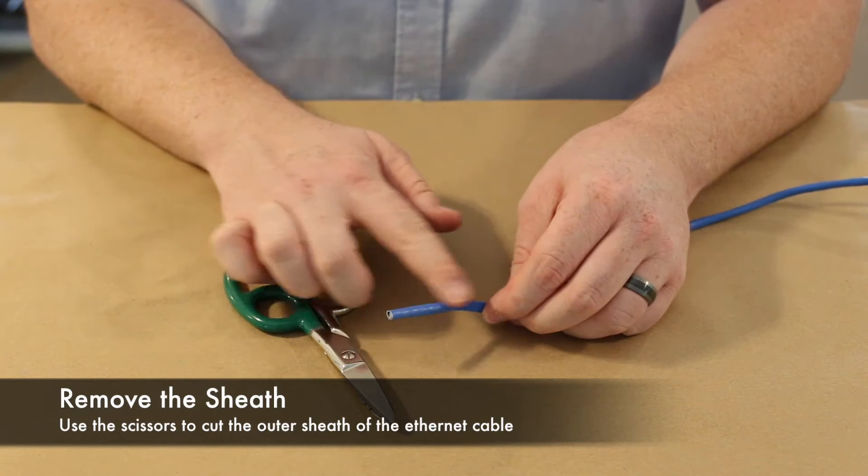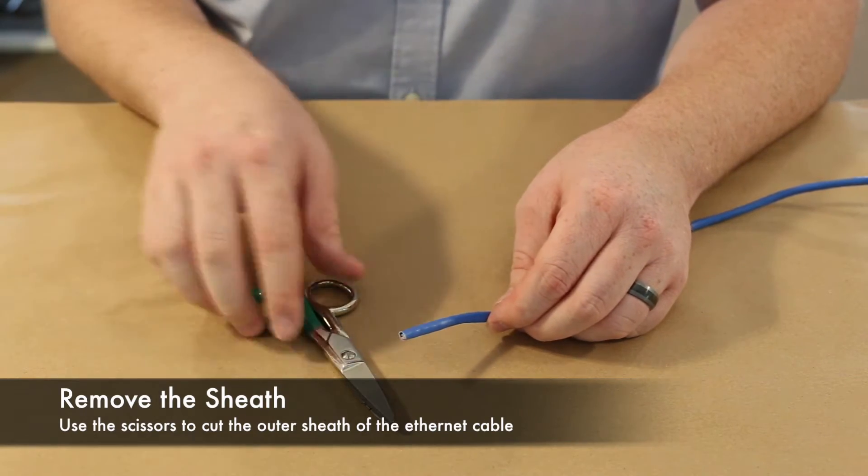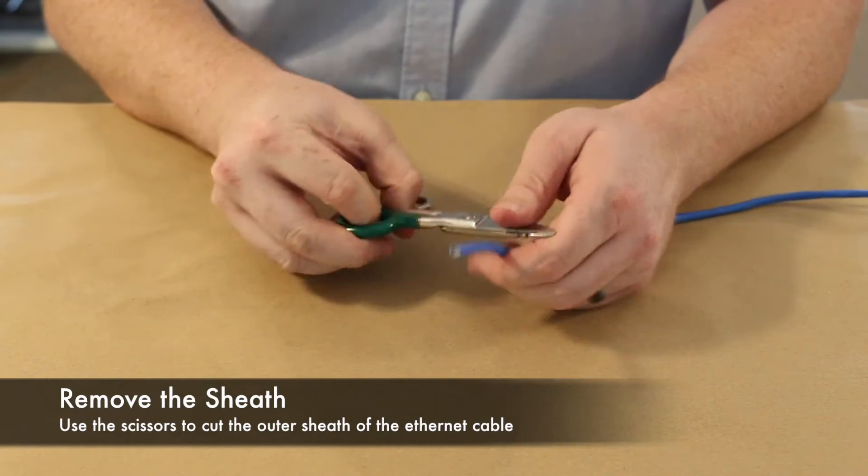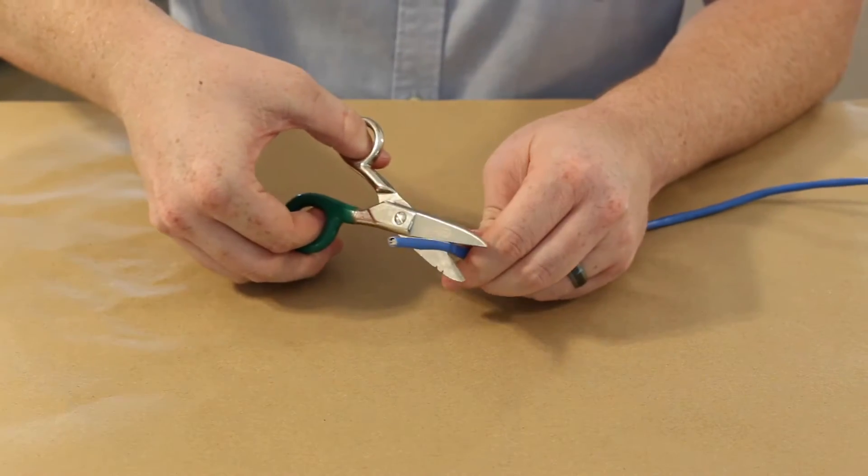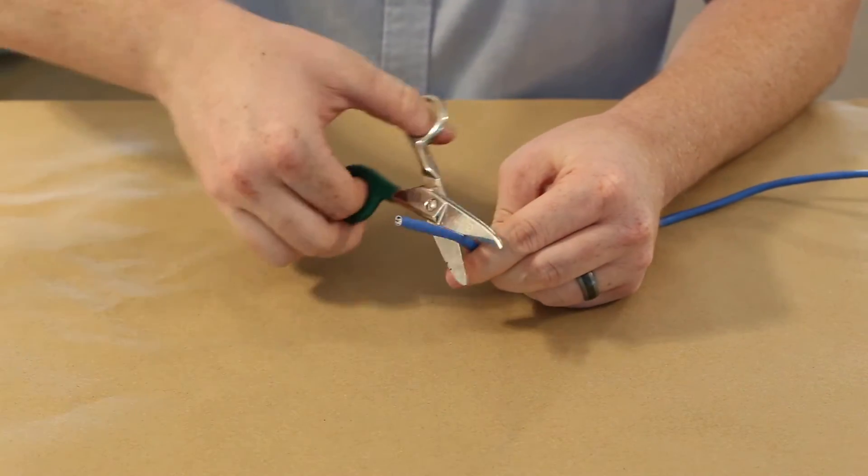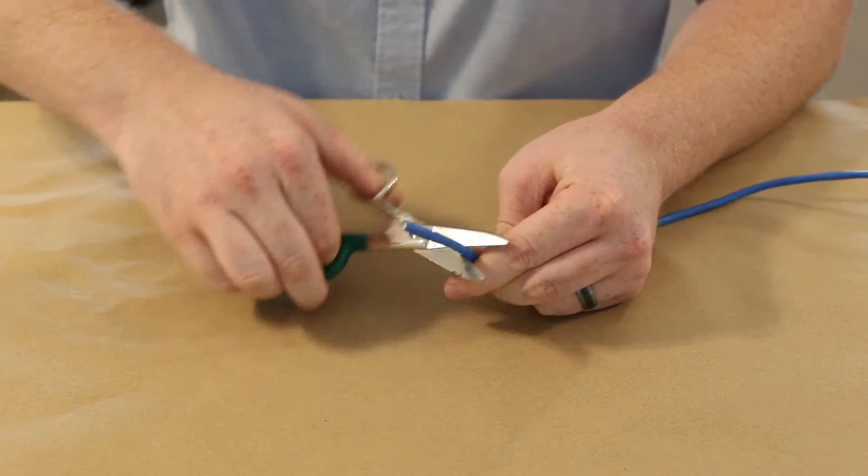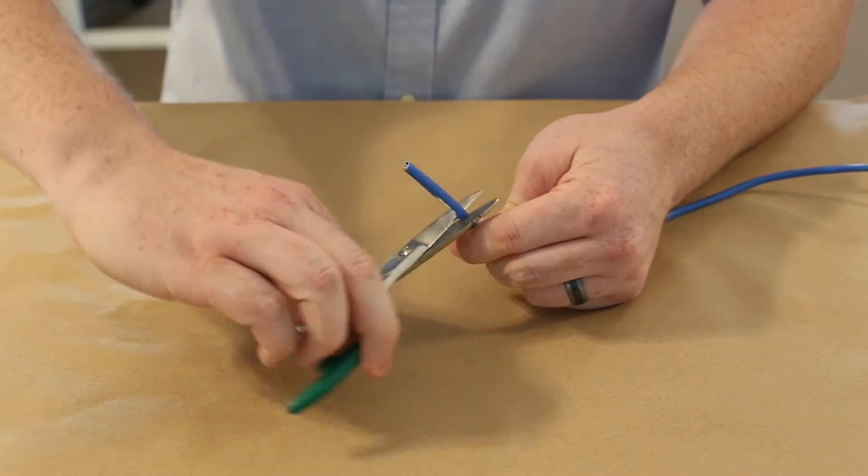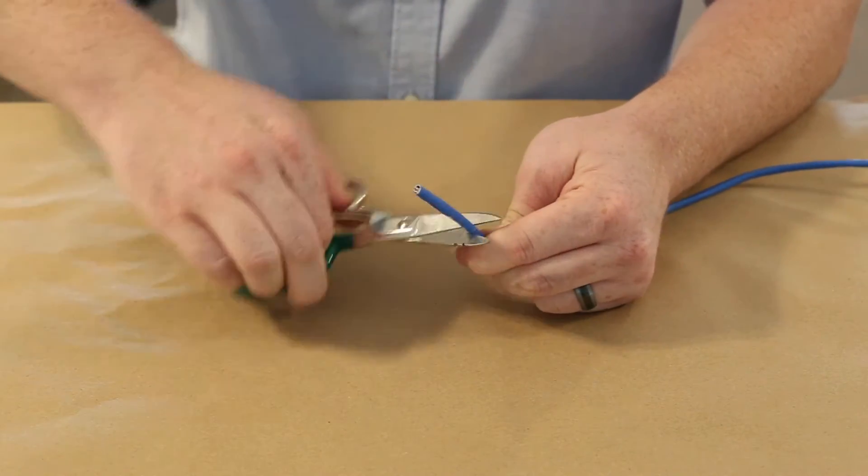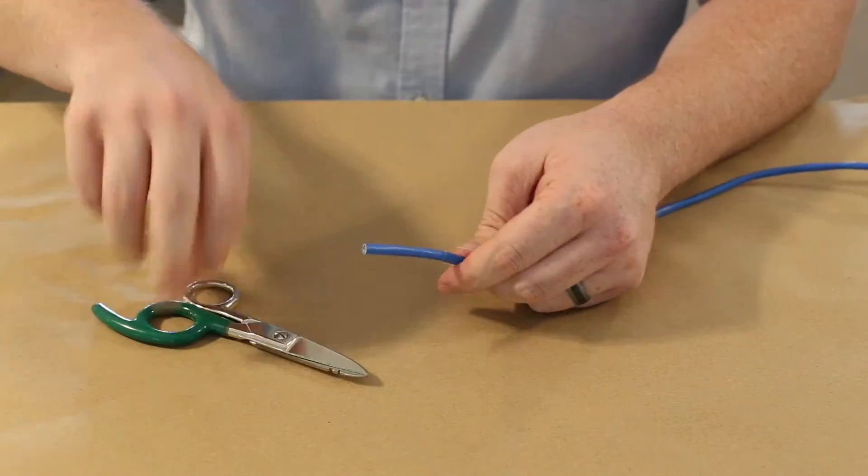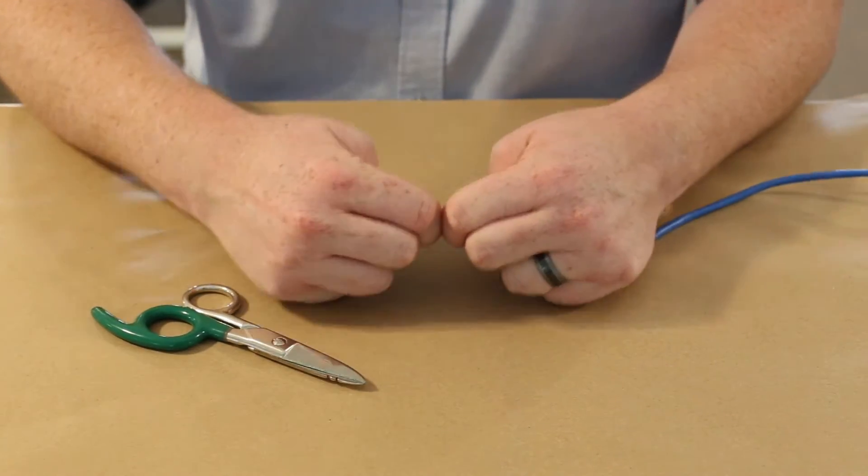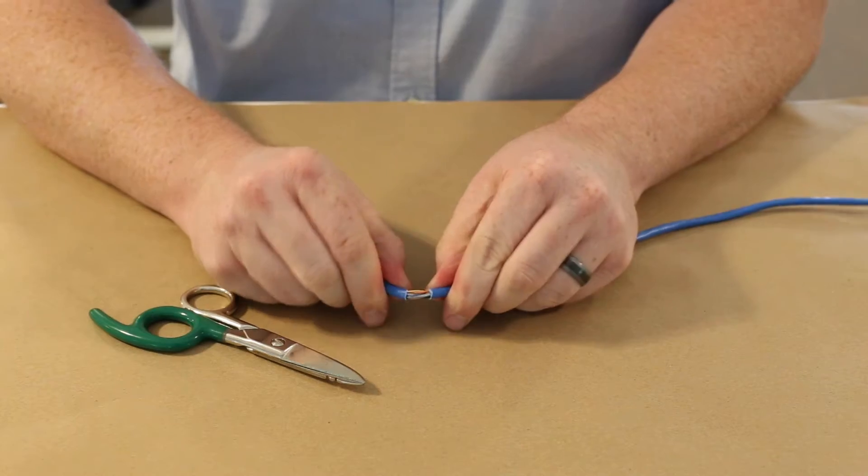So the first thing we're going to do is remove this outer sheath from the Ethernet cable. I'm going to take my scissors and carefully remove the outer sheathing. We're just going to put a little bit of pressure and run the scissors around the cable. We don't want to nick any of the cables inside. I'm going to pull this apart like so.